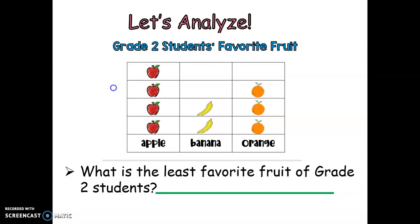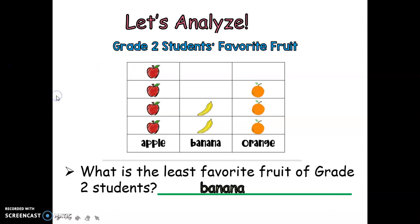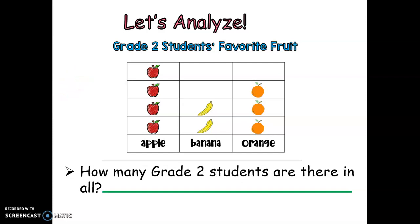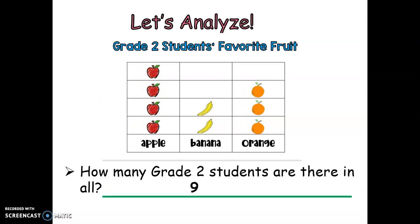Next, what is the least favorite fruit of grade 2 students? When we say least, it means it got the lowest or smallest number. The answer is banana, because two of them drew banana. And how many grade 2 students are there in all? We are going to count all the fruits drawn here, and each fruit was equivalent to one. So, there were nine students who drew their favorite fruit on the pictograph.